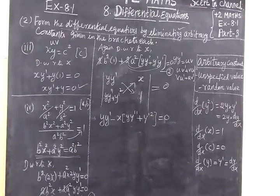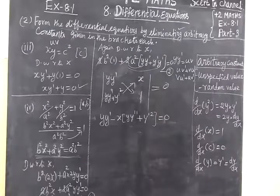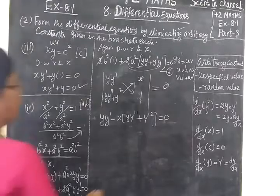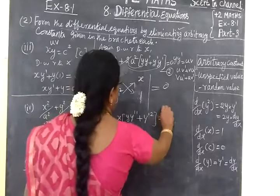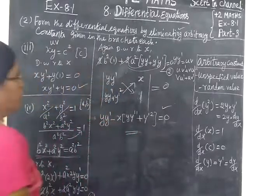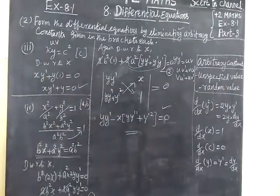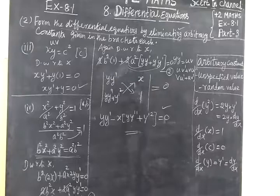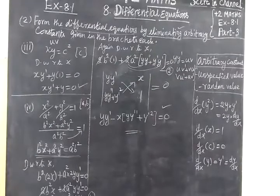So the final answer is: y y dash minus x y dash squared, plus y y double dash equal to 0. This answer is correct. In the next class we will see problem 4, the next two terms. Thank you.